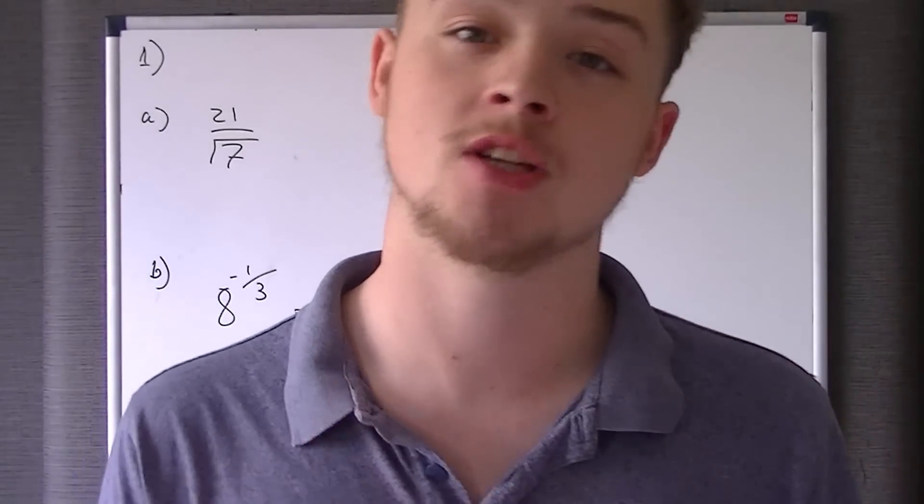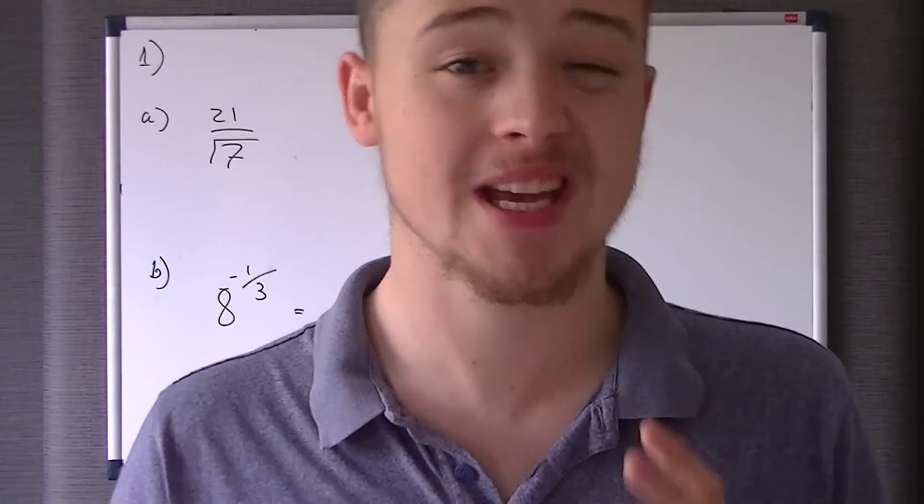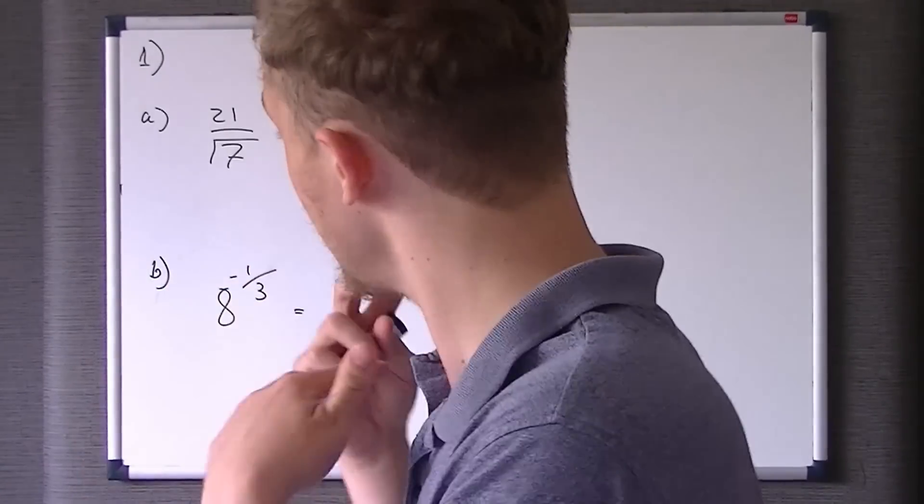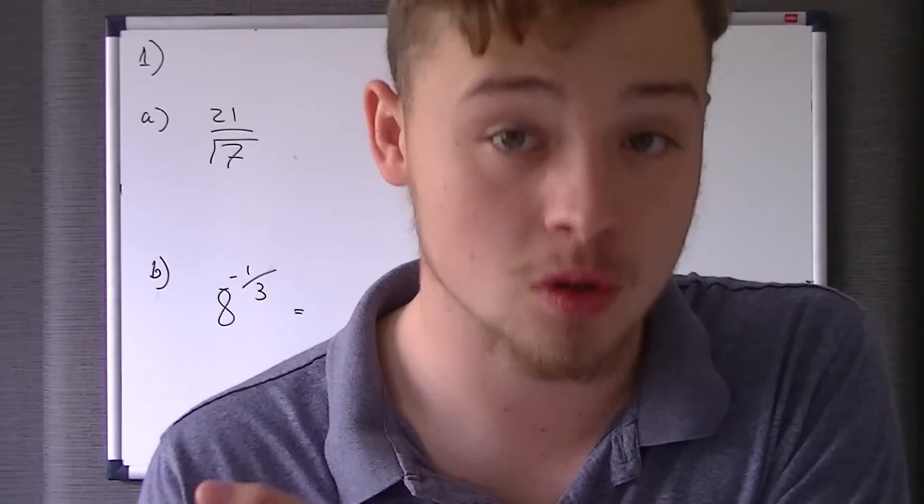The key with this is rationalizing the denominator. Just a word of notice, you never in C1 ever leave a surd on the bottom. However, we can't change the value, so we've got to times it by something equal to 1, but that something also has to remove this surd off the bottom.